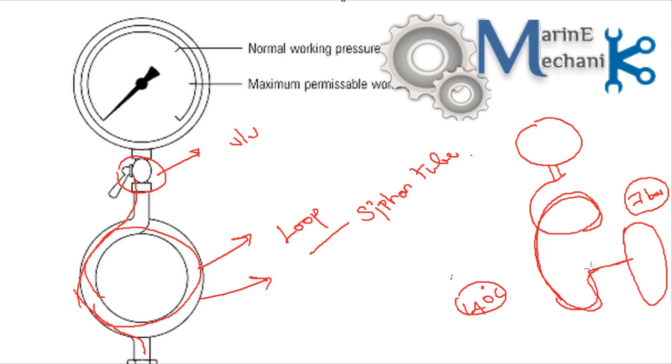If there is no loop, if the tapping is going to be straight from the boiler, no loop, just straight from the boiler, the steam or water which is at 140 degrees celsius just goes and hits the bourdon and then it might be a problem for it or it might get damaged.